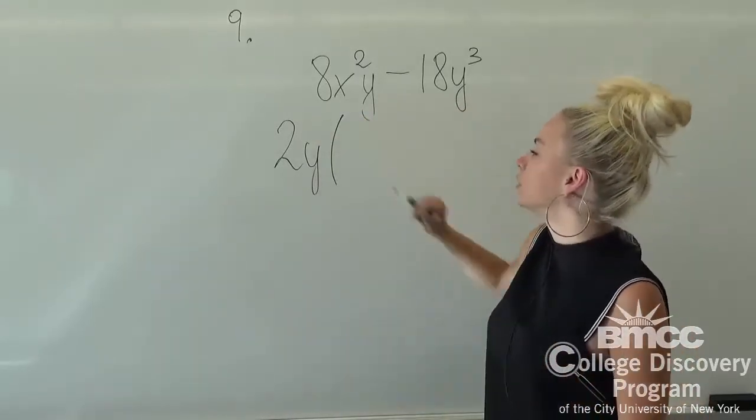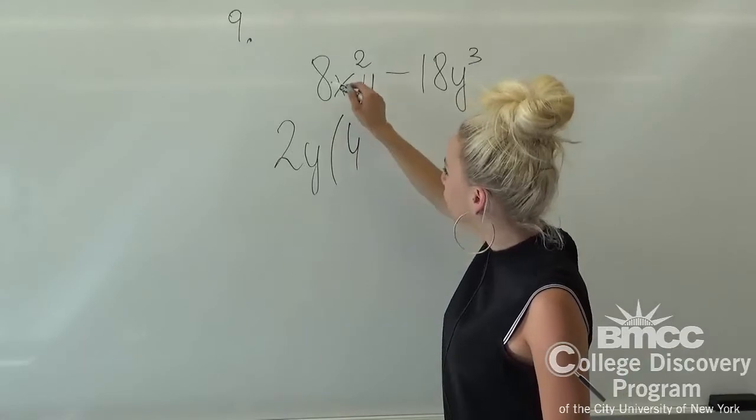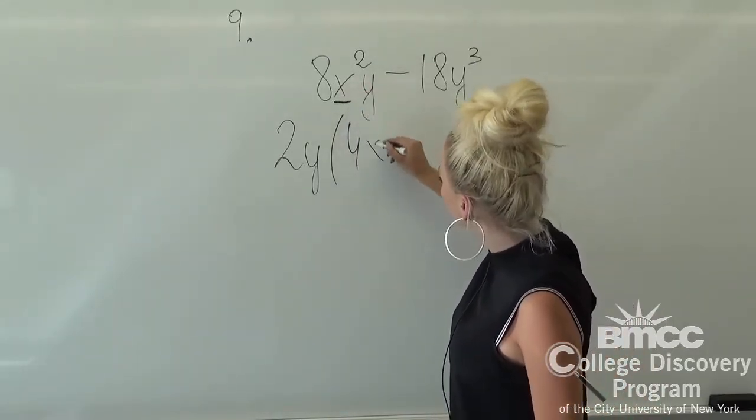So right now, from the first term, we're going to have left 4, because 2 times 4 is 8, and we're going to have left also our x².